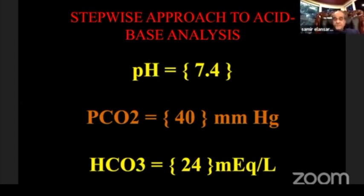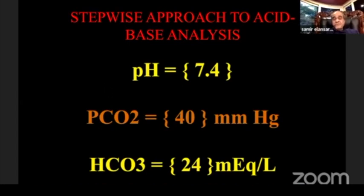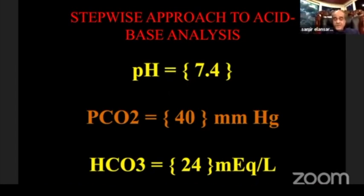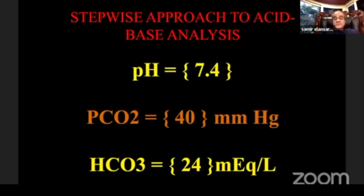Forty nanoequivalents is the hydrogen ion concentration in our body to produce a pH of 7.4. Nanoequivalents are less than one-millionth of a milliequivalent — all other ions in our body are measured in milliequivalents, and milliequivalents equal one million nanoequivalents. So the hydrogen ion concentration is very, very small.